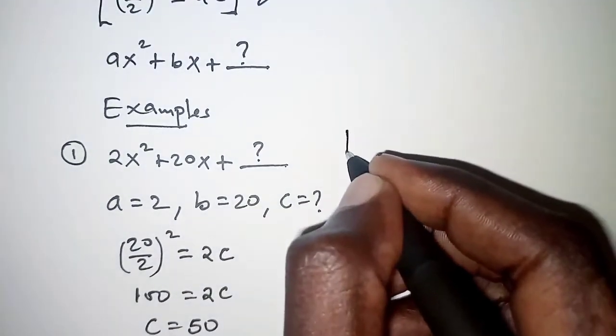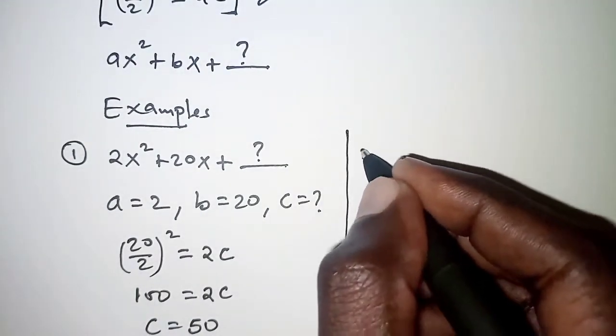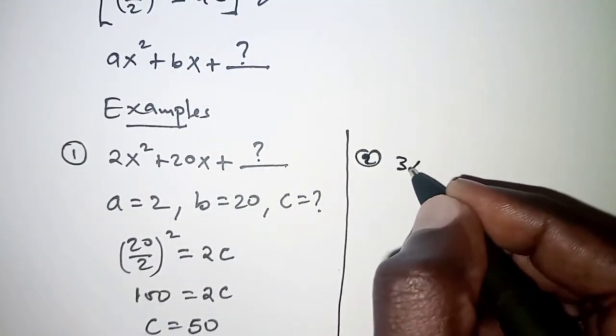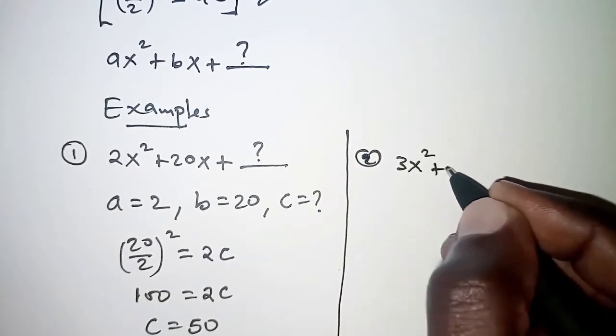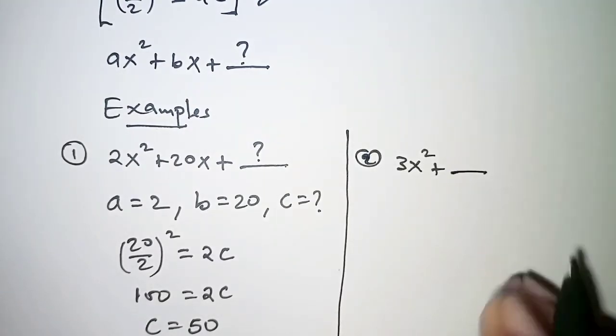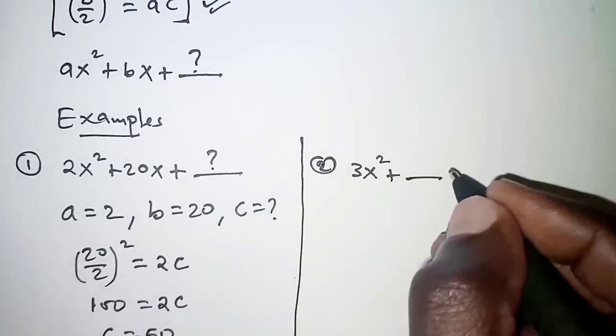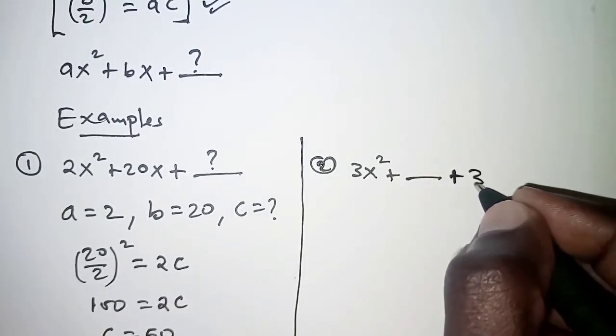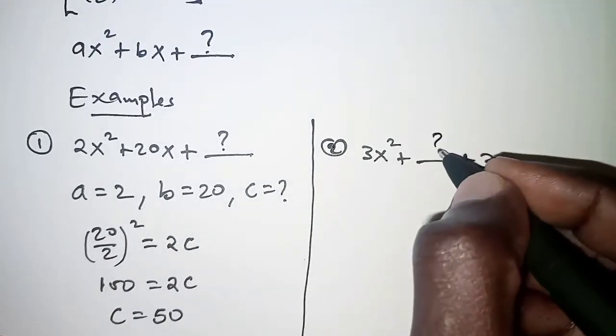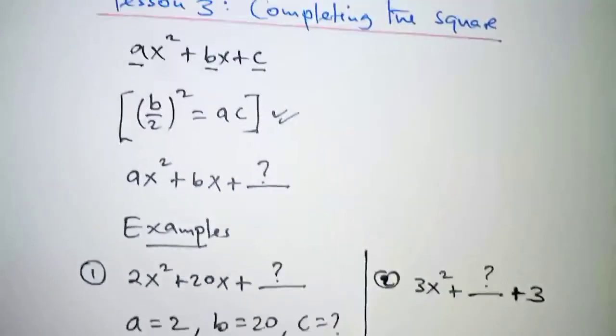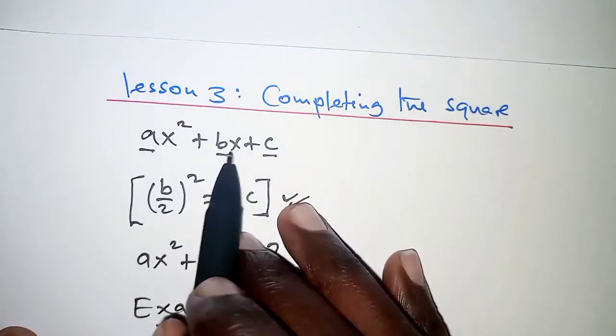Let's consider the next example. If you have 3x² + ? + 3, where the middle term is missing, if we have a as 3, then what is this missing term? We're looking for bx.